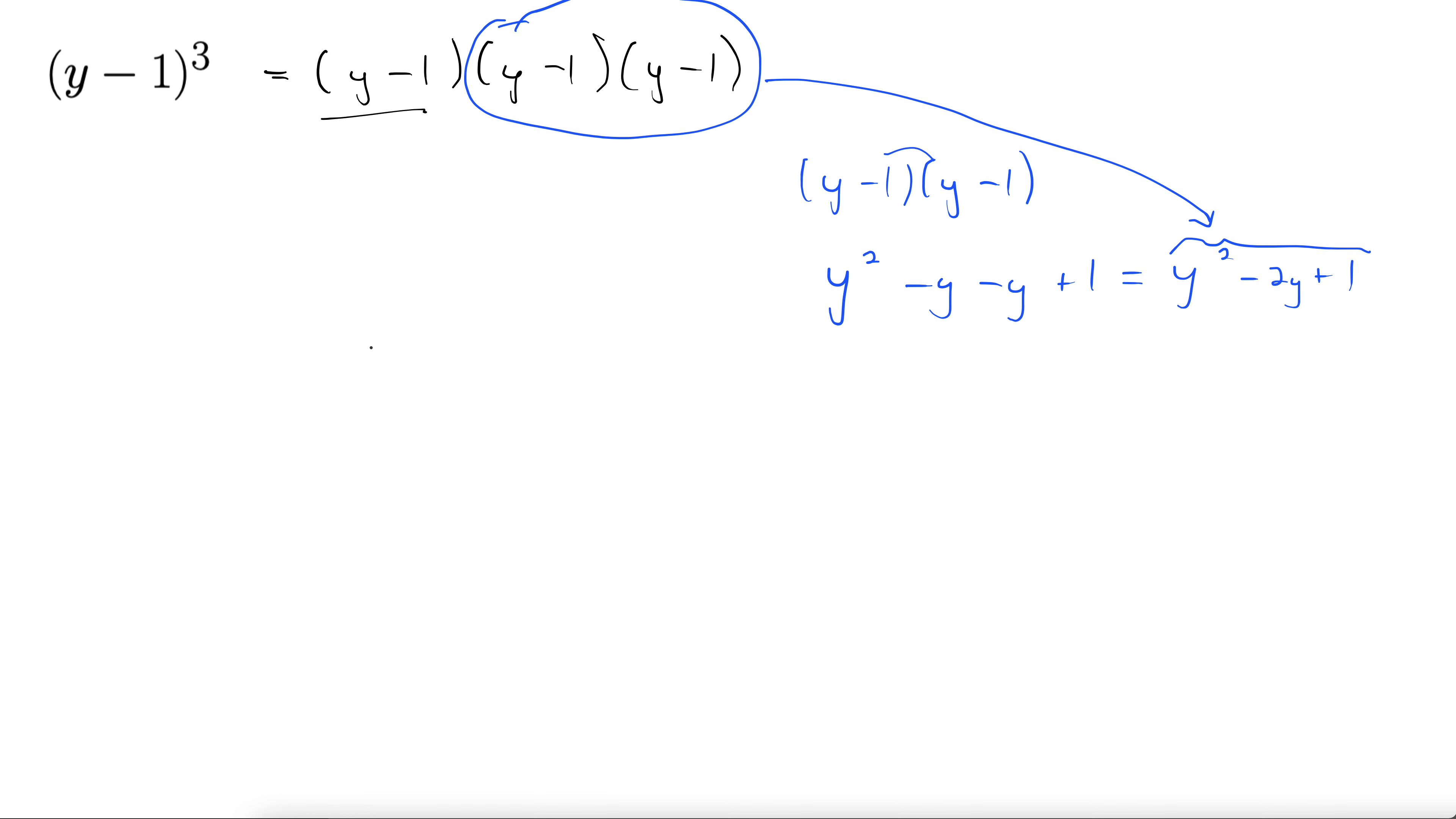So let's replace it. So now we have y minus 1, that's still hanging out in front here, times quantity y squared minus 2y plus 1. Let's do a double distribute next. First this y term is going to multiply through to all three of these in this trinomial. Then we'll come back and take this negative 1 through to all three of these in the trinomial.